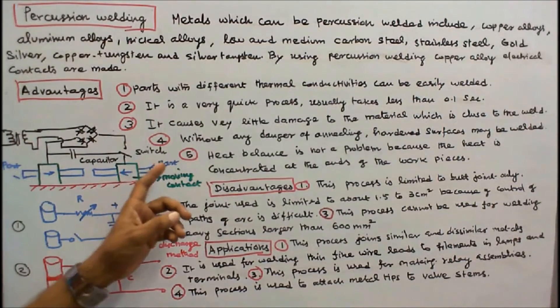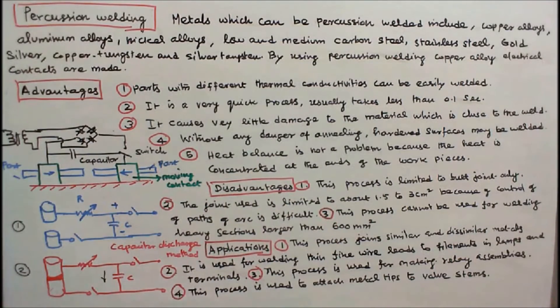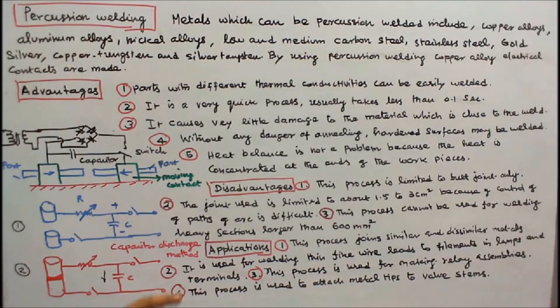Applications are: number one, this process joins similar and dissimilar metals. Number two, it is used for welding thin fine wire leads to filaments in lamps and terminals. Number three, this process is used for making relay assemblies.